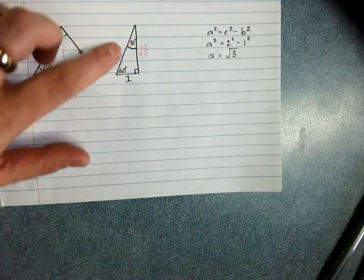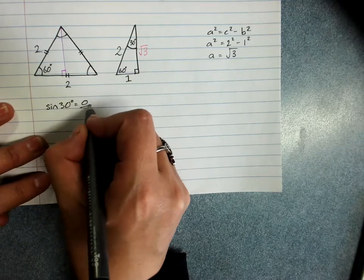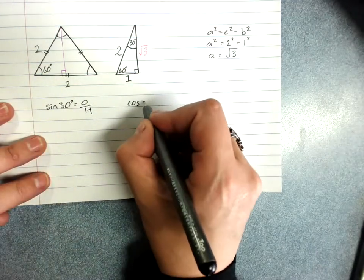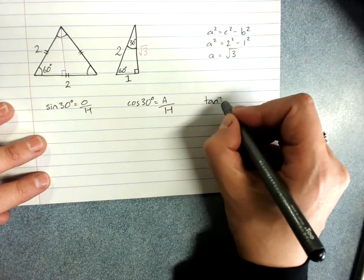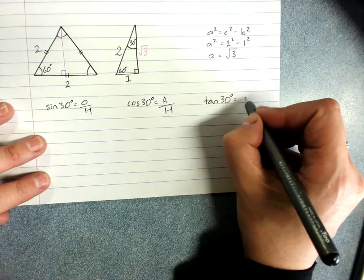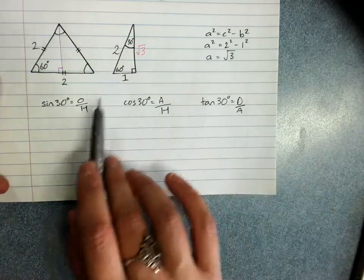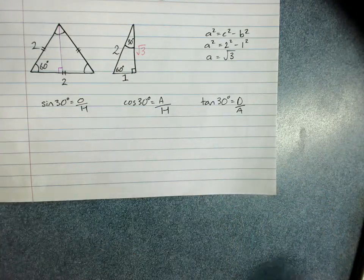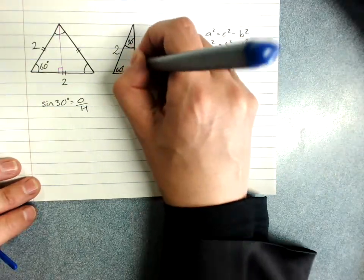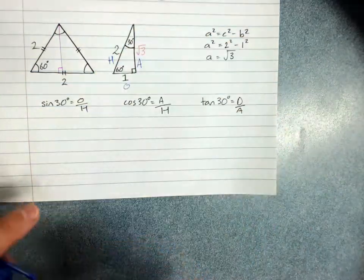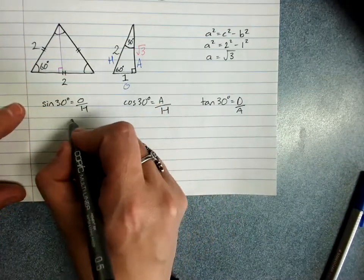So we'll put in our root 3. And I'll start with 30. So we want sine of 30 degrees, cos of 30 degrees, and tan of 30 degrees. We'll substitute in our values or label our sides. We're using 30 degrees as our reference angle. So this is opposite, adjacent, and hypotenuse.